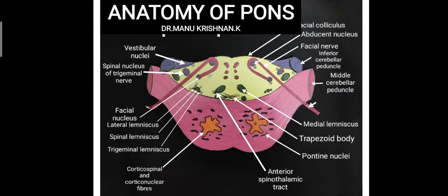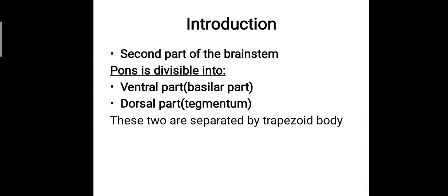Hi everyone, this is Dr. Manu Krishnamki and today we will be discussing about the anatomy of pons. The pons is considered to be the second part of the brainstem, and the brainstem is composed of midbrain, pons and medulla. We have already studied regarding the midbrain, so today we will be discussing about the pons.